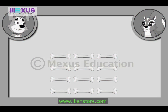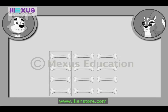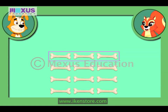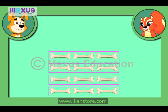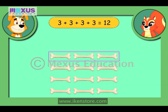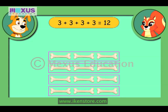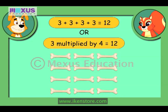Of course, Buster. Multiplying 3 by 4 is like adding 3 to itself 4 times, which gives us 3 plus 3 plus 3 plus 3, which is equal to 12. Well done, Amber.